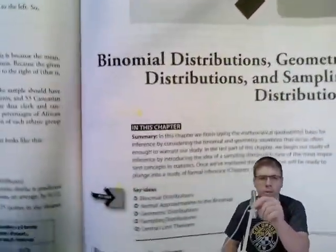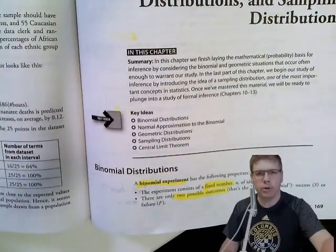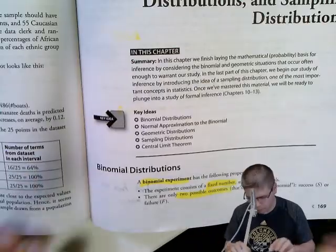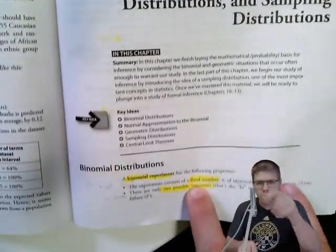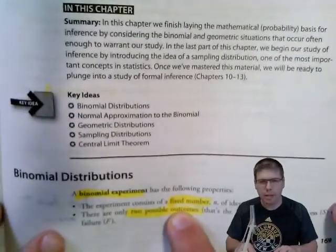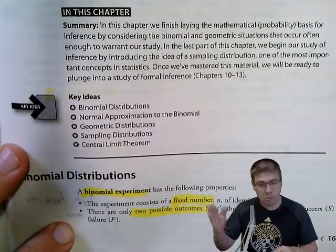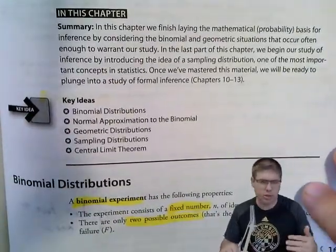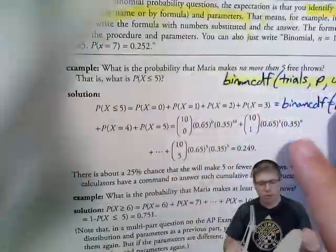In a binomial setting, we're dealing with two possible outcomes — that's the 'binomial' part. Another key feature is that we have a fixed number of trials, which separates it from the geometric. We set a number of trials and attempt something that many times — like flipping a coin ten times or taking ten free throws.